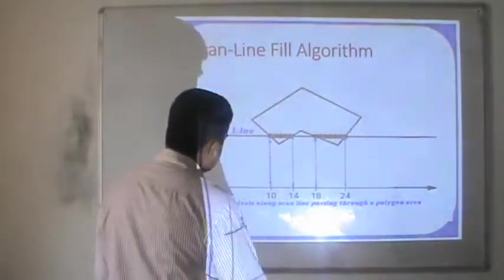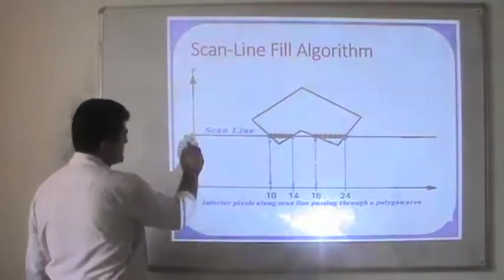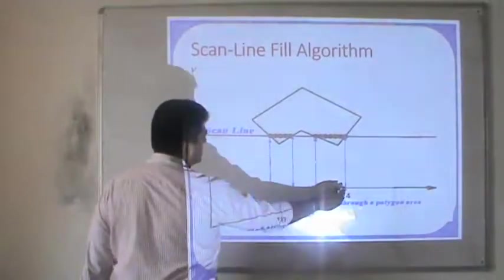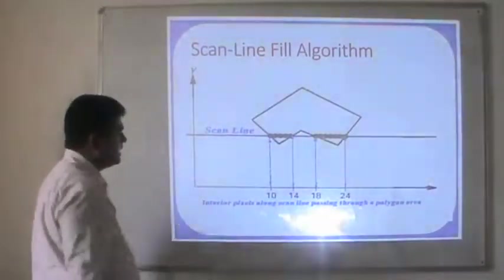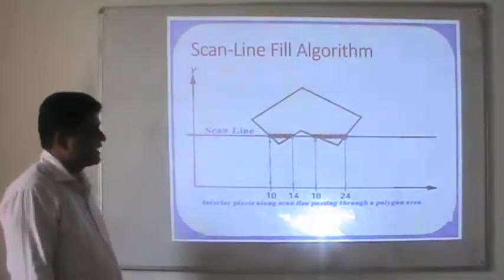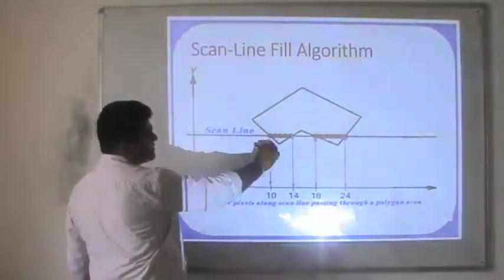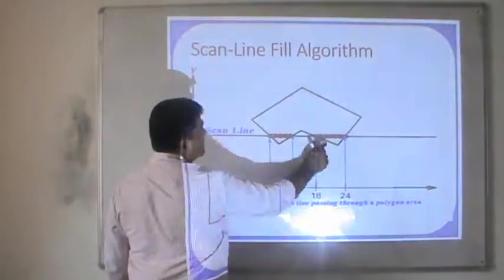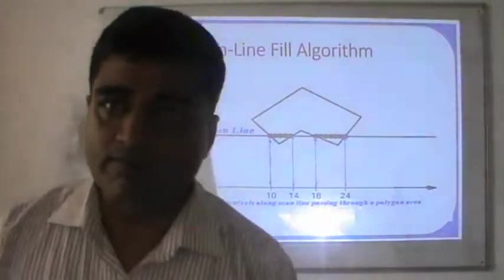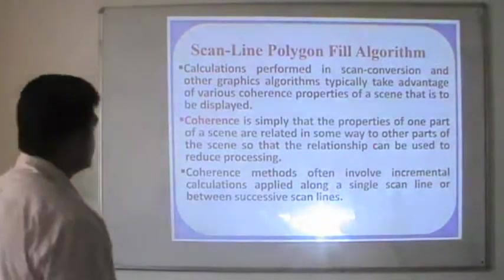Now if we see here, the scanline is passing through this particular location. This is the point of intersection, and this is the scanline passing through the polygon. The interior pixels — all the pixels on this particular scanline — will be colored with the same color. So this is the scanline polygon fill algorithm.